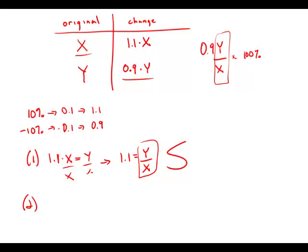Statement number two tells us the increase in price per share of stock X was 10.11 times the decrease in price per share of stock Y. The increase was 10%, so 0.1 times X equals 10.11 times 0.1 times Y. With a little more rearranging, we can isolate Y over X, and that gives us the information necessary to solve the question. So this statement also by itself is sufficient.